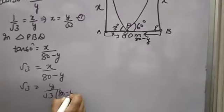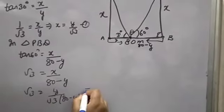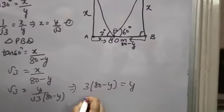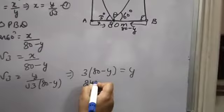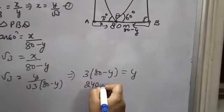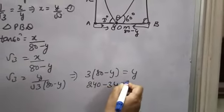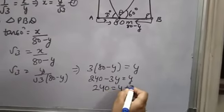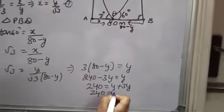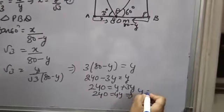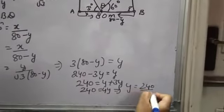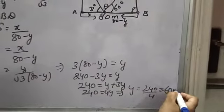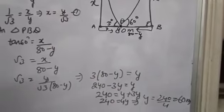Now you can just solve it. Root 3 into root 3 is 3. 3 times 80 minus y equals y. 3 into 80 is 240 minus 3y equals y. 3y comes to this side, 240 equals y plus 3y, means 240 equals 4y. So y equals 240 over 4, which is 60. So y is 60 meter.